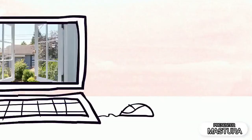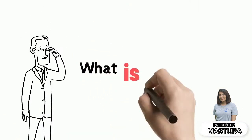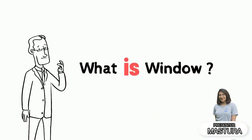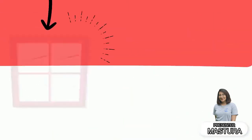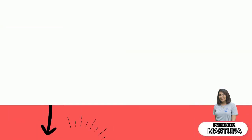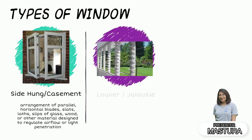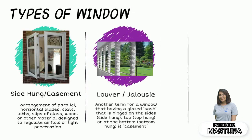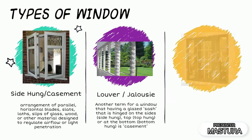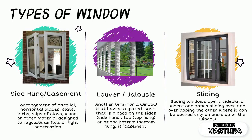For my part, I will talk about windows. The defects and rectification work involves: What is a window? A window is a wall, door or roof opening that allows light or air to flow inside, outside and through an enclosure or building. There are 3 types of window: the first one is side hung or casement, the second one is louvre or jalousie, and the third one is sliding window.